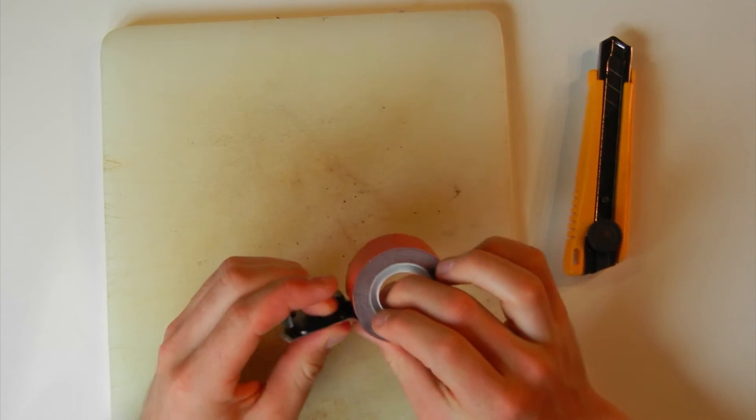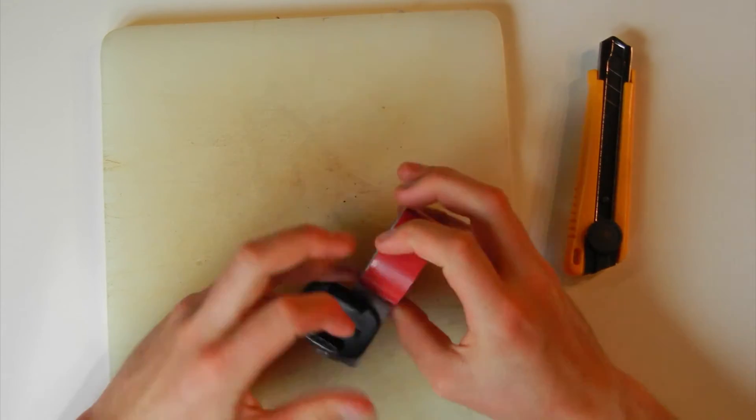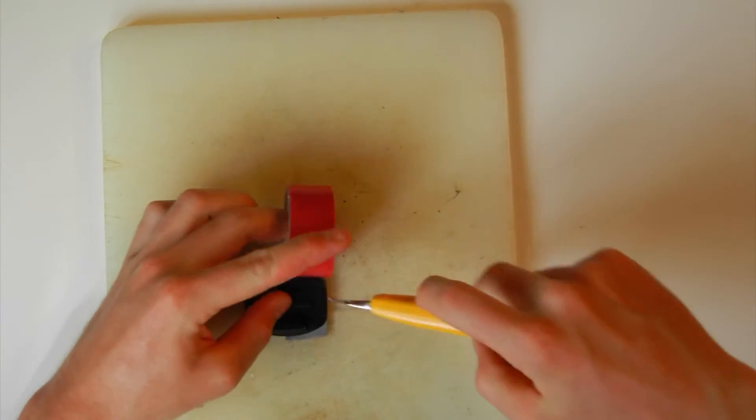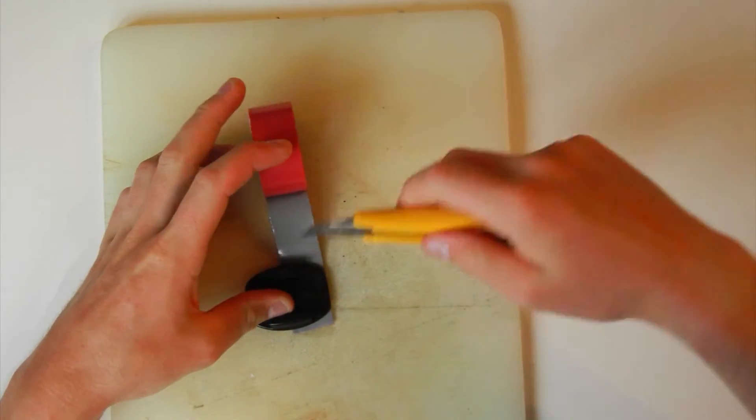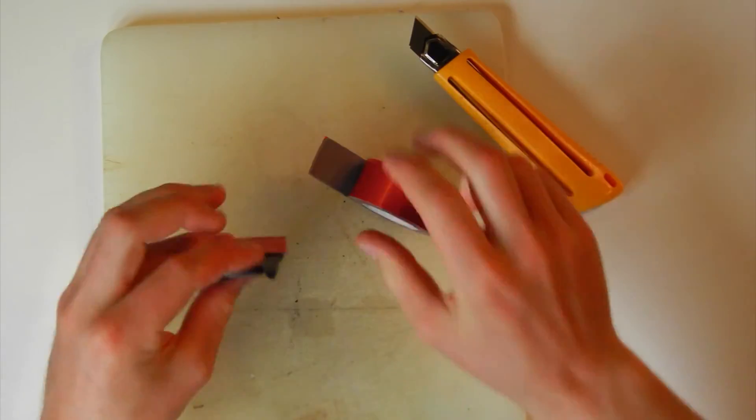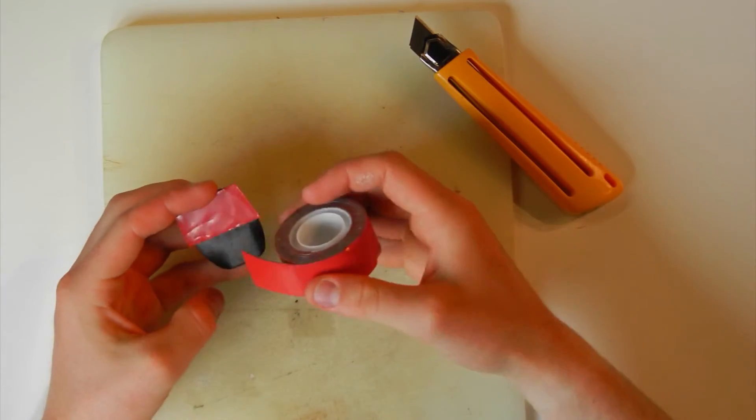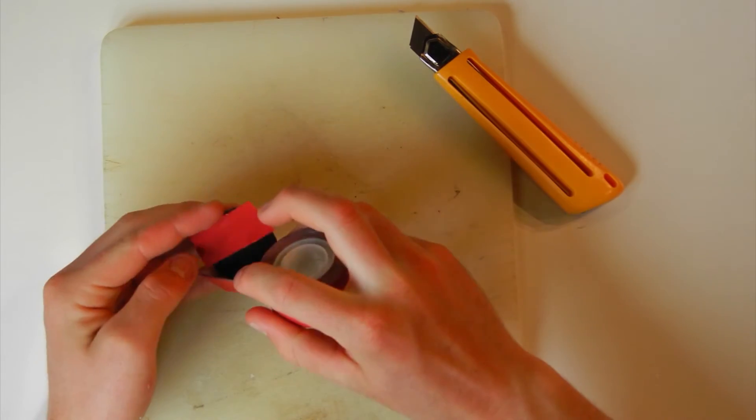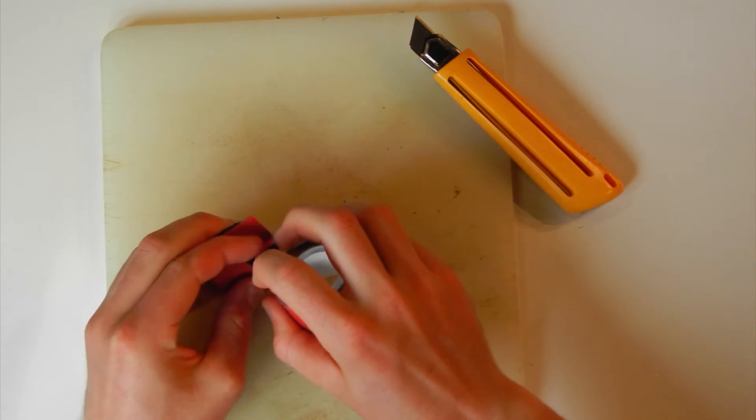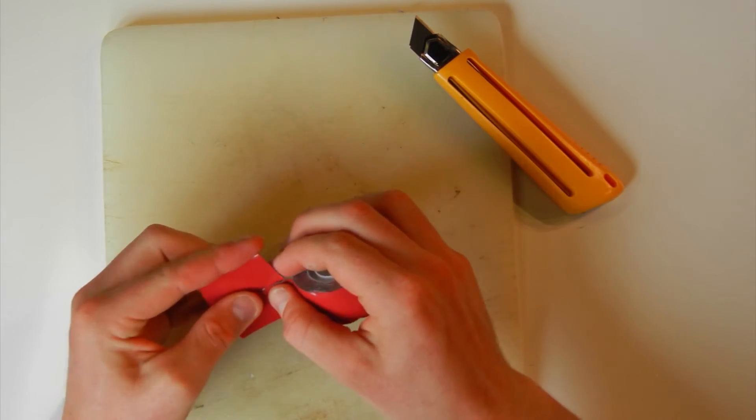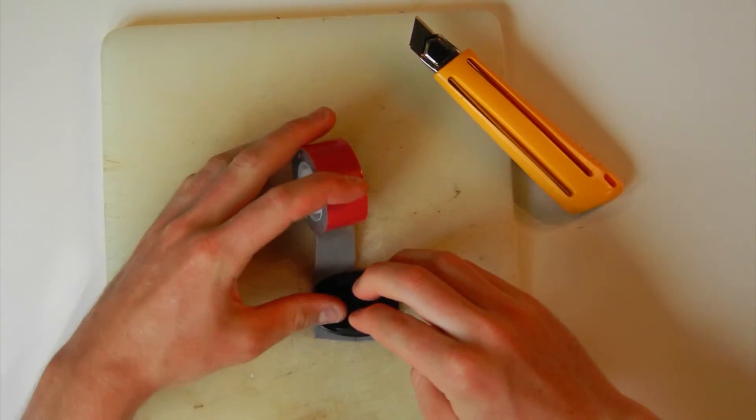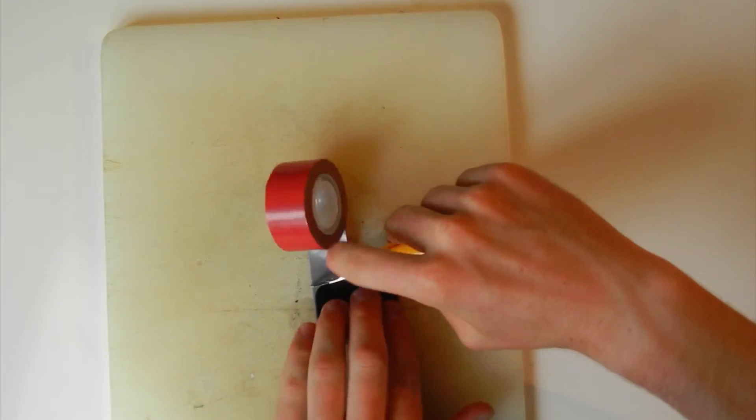Line it up at the edge, just like that, and then just take your X-Acto knife, or your sharp knife, whatever you're using, and cut it off right there. All right, so that's one piece. Now we're going to put the second piece right beside it. A good press down, just like that, and then we'll cut that one off.